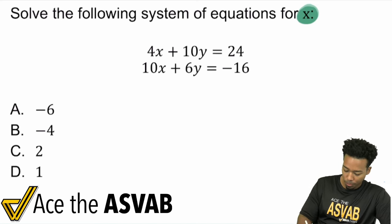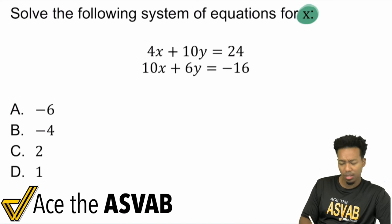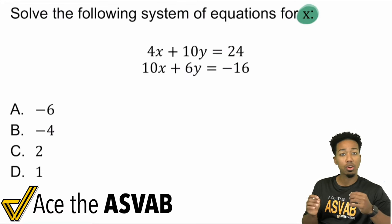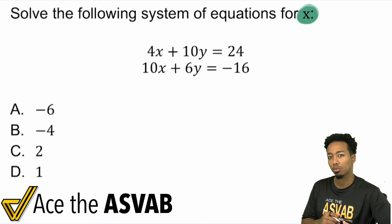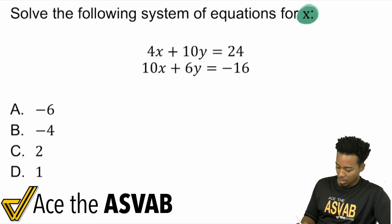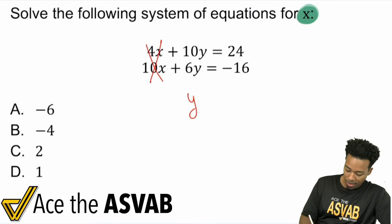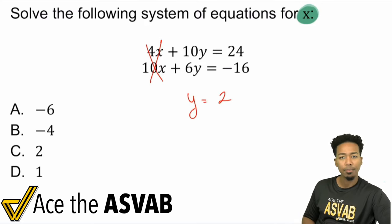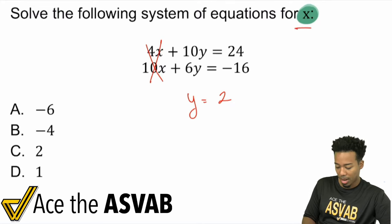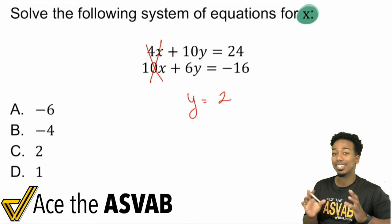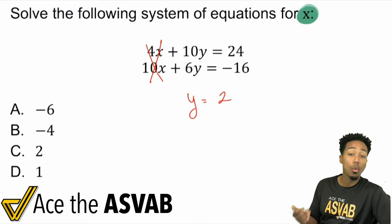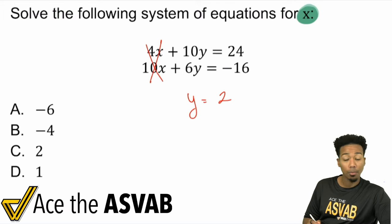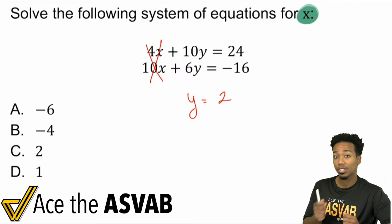With systems, we can solve using elimination or substitution — you might have heard those terms. Let's say you accidentally eliminated X and found that Y equals 2 or something like that. Well, the thing is, you weren't asked for Y, you were asked for X. And if you pick that answer for Y, we might be in a situation we could have avoided if we knew what we were looking for. So that's tip number one: know what they're asking you to solve for — X, Y, or both.